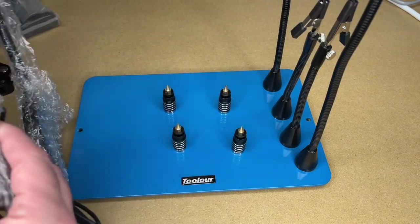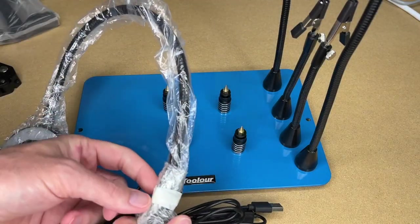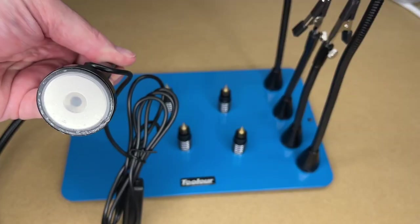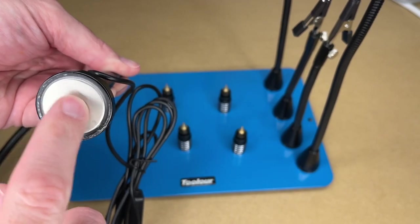Next we have the magnifier. This is powered by USB, so you can use pretty much any USB charger, like an old phone charger, to power this. And here's the magnetic base here, and you can see that plastic on there.